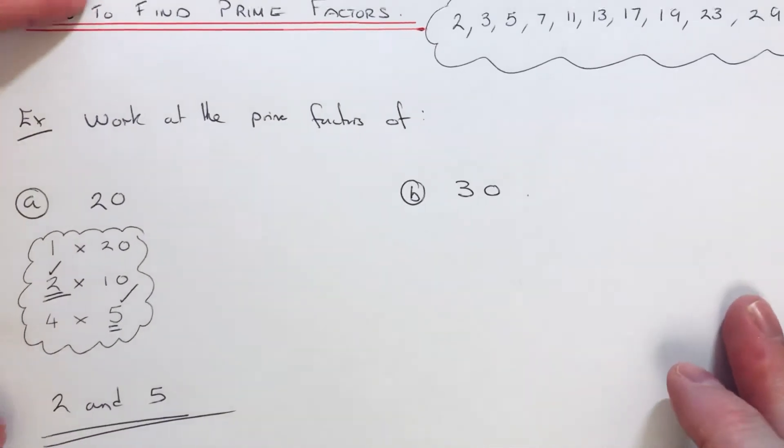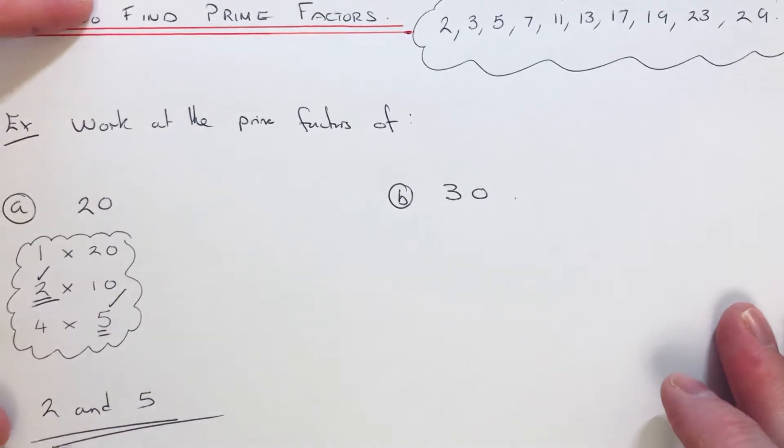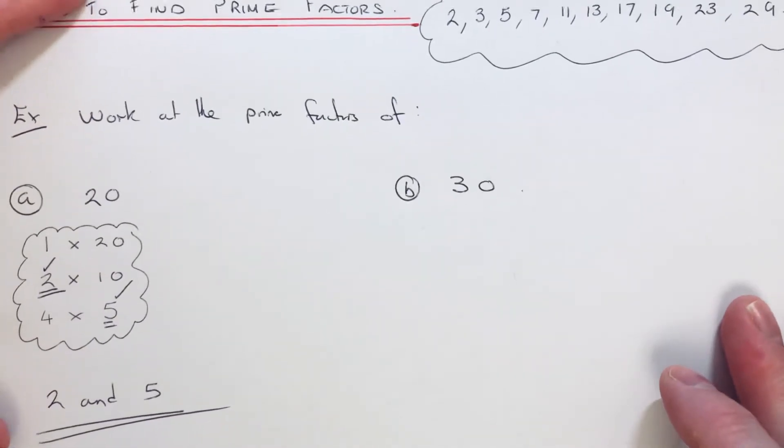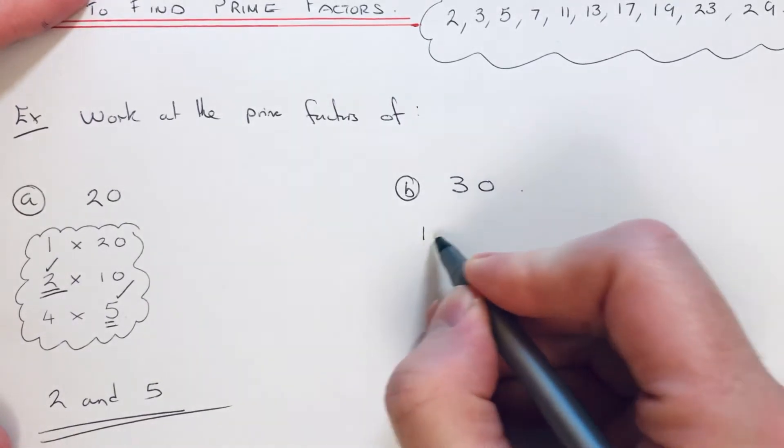Let's have a look at the second example. This time we've got to write down all the prime factors of 30. Again, start off with the 1 times table. 1 goes into 30 30 times.